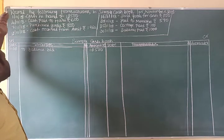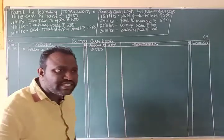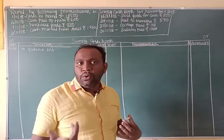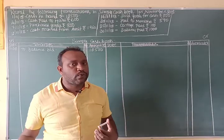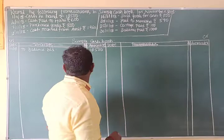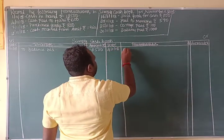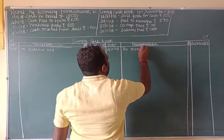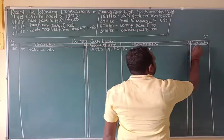4th November 2018: cash paid to Ari. The general entry will be Ari's account debit to cash account. Since it is a payment, it goes to the credit side. Entry: 4th November 2018, By Ari's Account — Rs. 600.